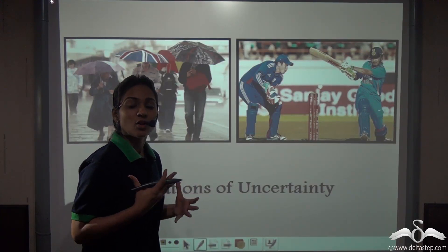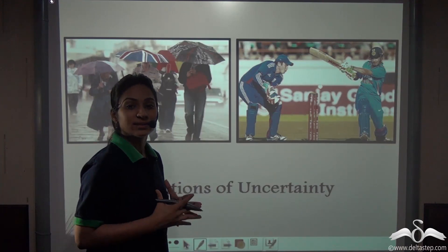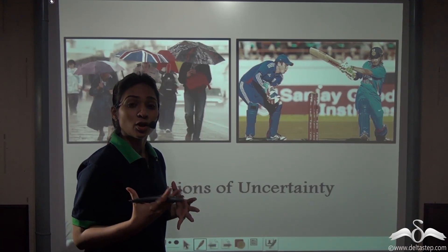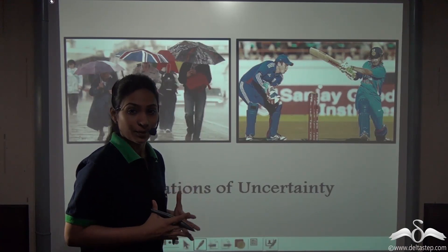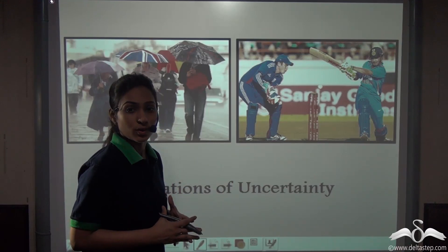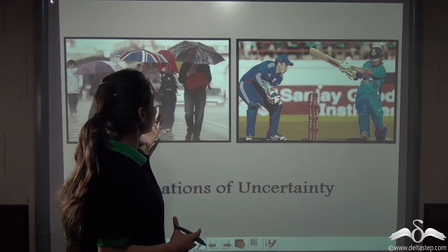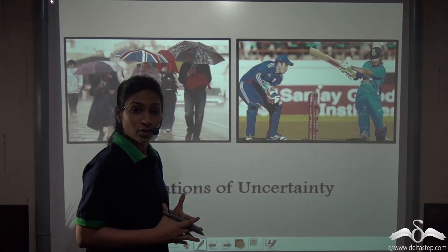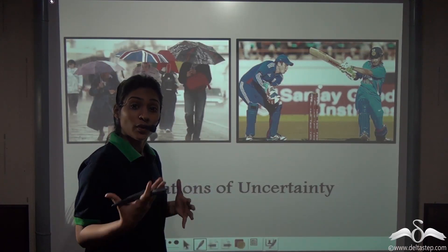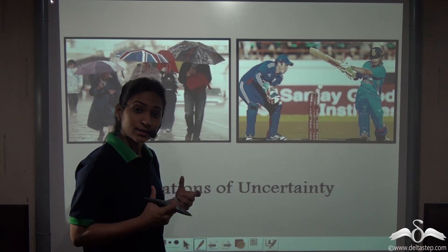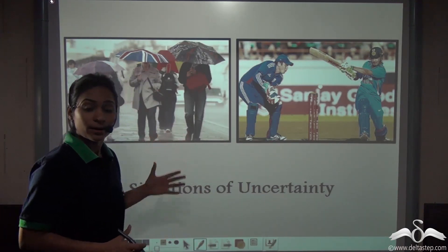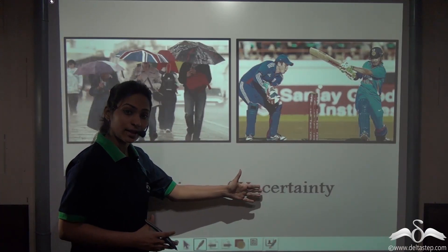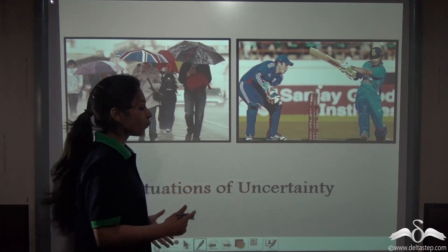In our daily lives, we face a lot of situations with uncertainty. Situations which you do not know — they may or may not happen and their results are unknown to us. Like, it may or may not rain today, India may or may not win the match today, or you may or may not win a lottery. In mathematics, we can study these kinds of situations of uncertainty with probability.